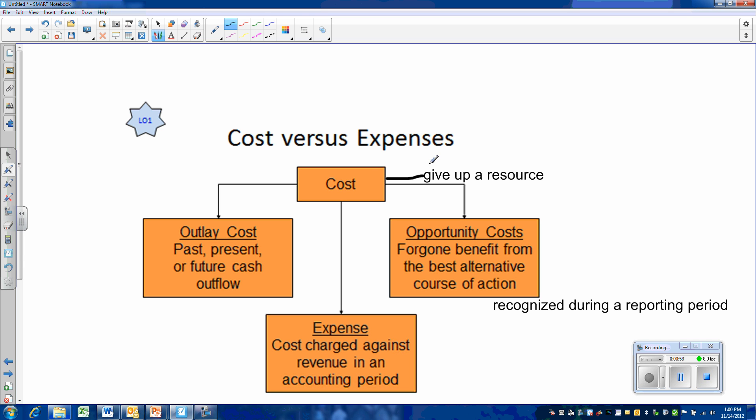For example, if you purchase equipment and you do so using a line of credit from the bank, well, you haven't given the cash, but you have agreed to repay that money in the future, which will result in an outlay of cash sometime in the future.